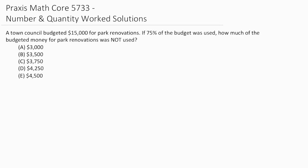Alright, so let's start with our first problem. It reads that a town council budgeted $15,000 for park renovations. If 75% of the budget was used, how much of the budgeted money for park renovations was not used?